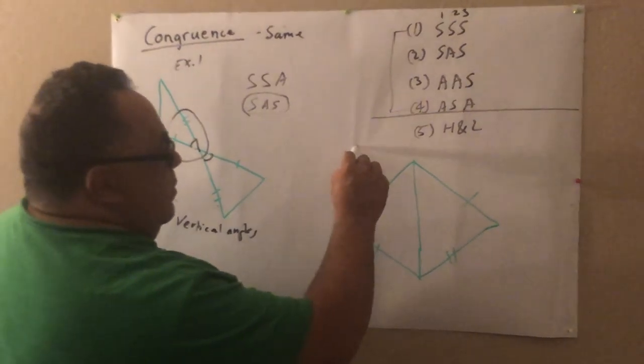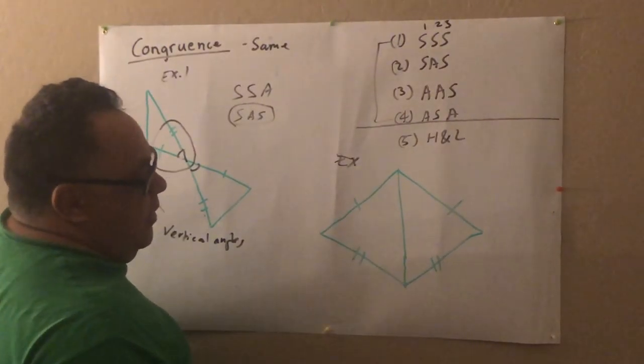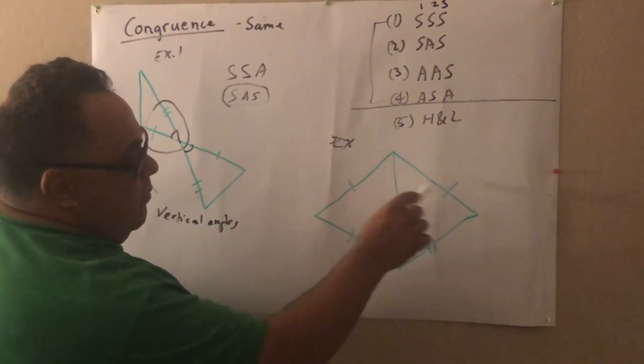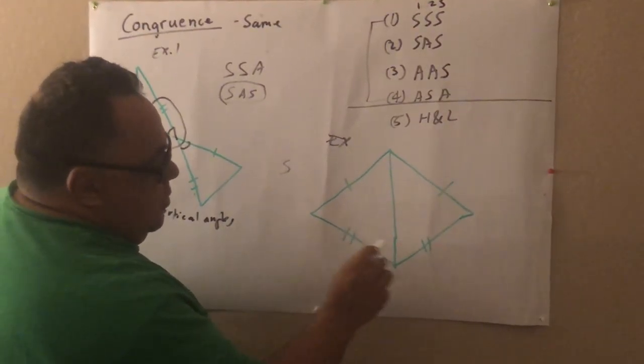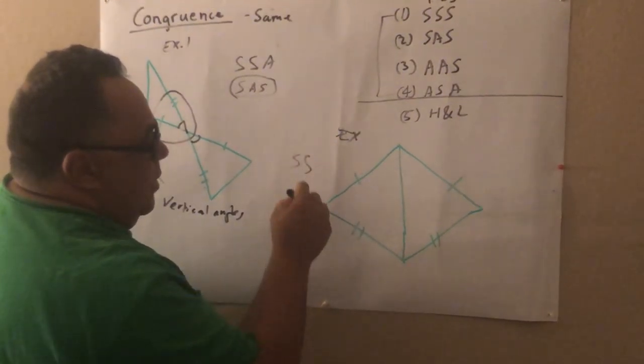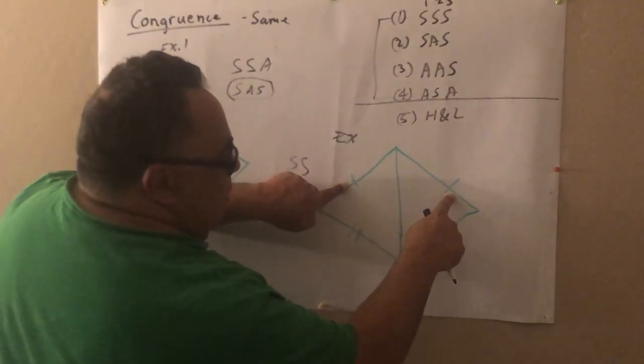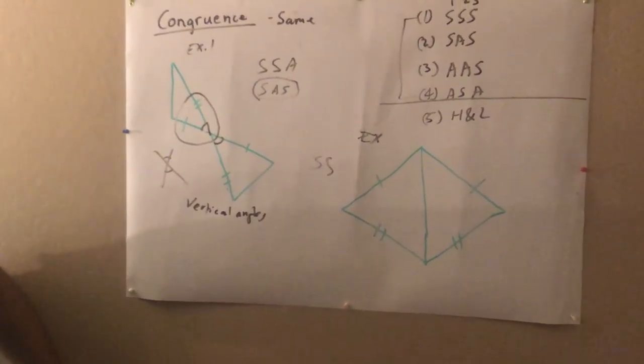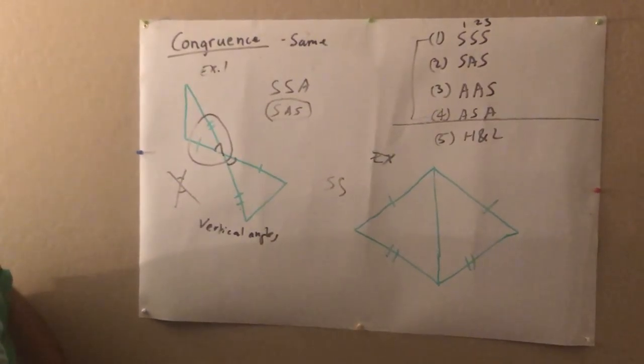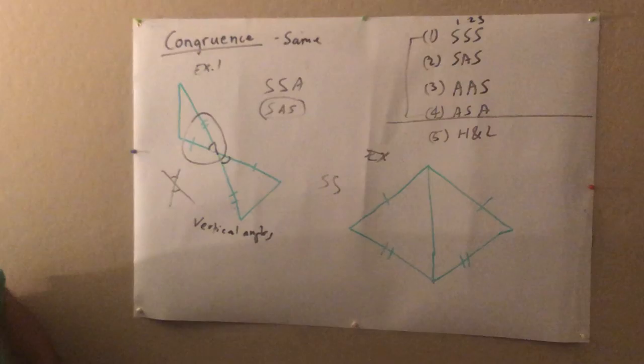Here's example number two. And again, this is not spelled out for you. We have one side right here, one tick mark, so we got a side. We got another side here, two tick marks, so we got another side. These two sides are congruent. These two sides are congruent. But again, it's the same SS. It's not telling you the third thing. It's not giving you another side or another angle.